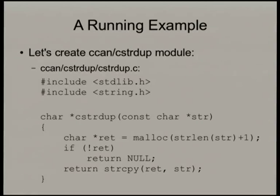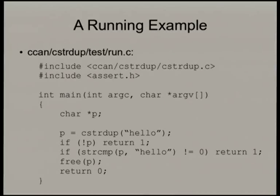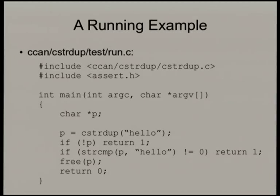In CCAN style this would be the c_strdup module. We write test code like this. One thing CCAN uses for testing — a little unusual — is we raw-include the .c source. That lets you test static functions and reach inside to change behavior. The test is simple: call c_strdup on the string 'hello'; if it fails to allocate memory return 1 (fail); if the string isn't equal to 'hello' we fail; otherwise free the string and return 0.